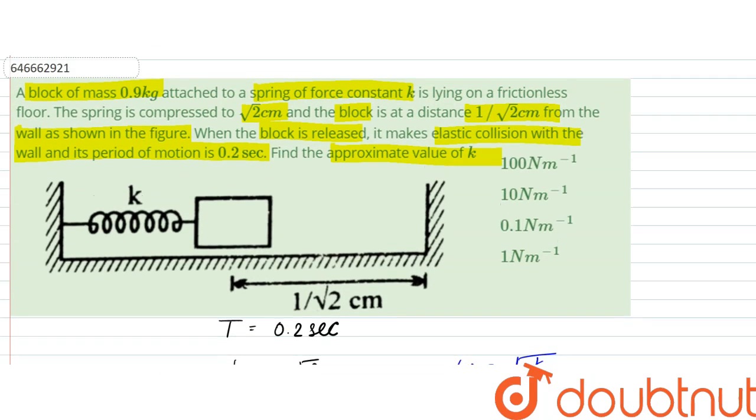Pi square is considered to be 10 approximately, so our answer would be 100 newton per meter, so that is option A. Thank you.